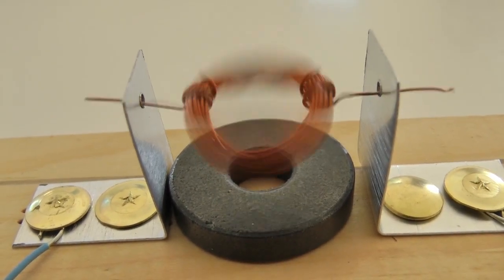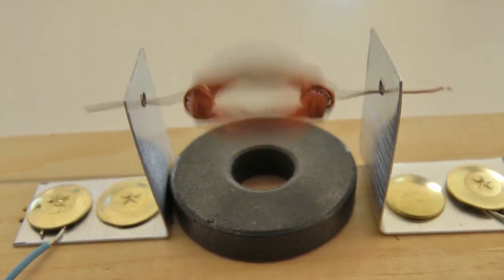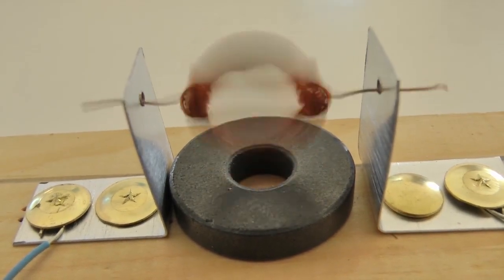Electric motors convert electrical energy into mechanical energy. They use the push and pull of magnetic fields to create rotary motion.